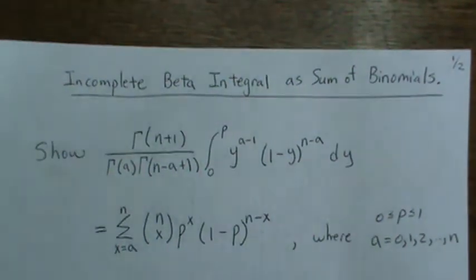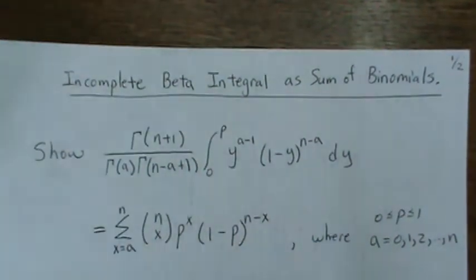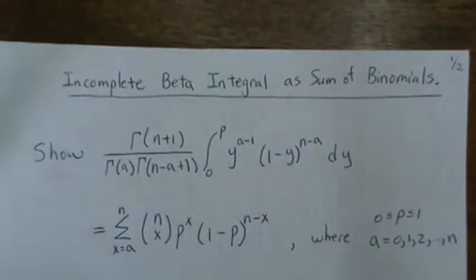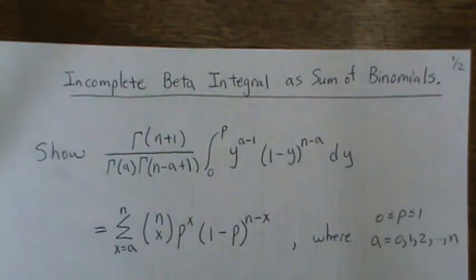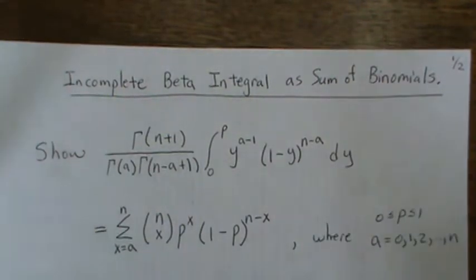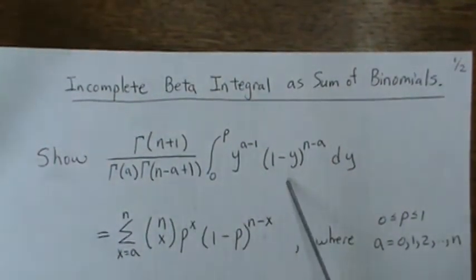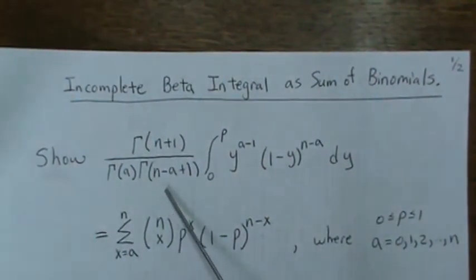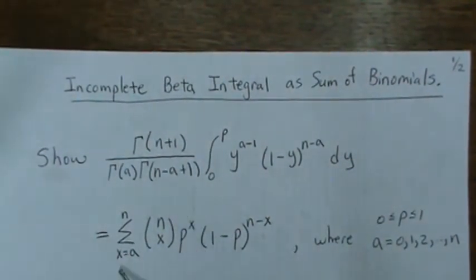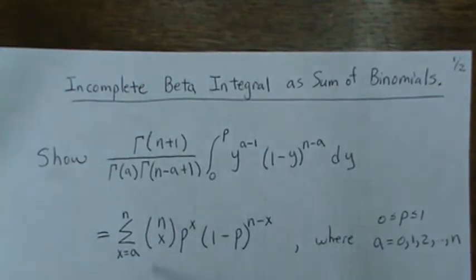In this video we're going to show that the incomplete beta integral can be written as the sum of binomials. This is the incomplete beta function, and these would be the sum of the binomials.